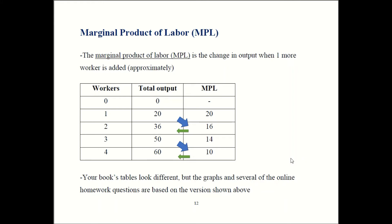Here's an example of how that would work. With no workers you get no output — that makes sense. When the firm adds their first worker they produce 20 units, so MPL is 20. With two workers, output rises to 36 — that's an increase of 16, so the MPL for that second worker is 16.